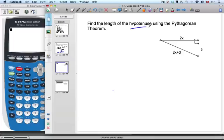It says find the length of the hypotenuse, which we all know is the angle opposite your 90 degree angle. So this is the angle or the length we'll be looking for using the Pythagorean theorem.